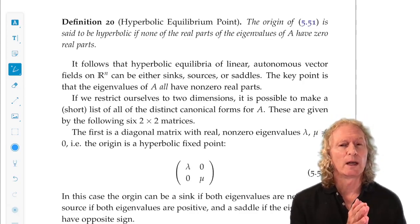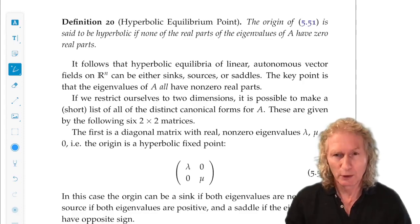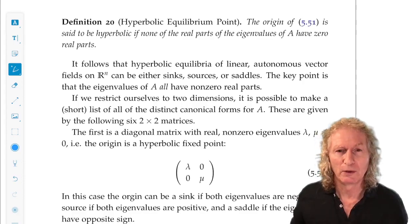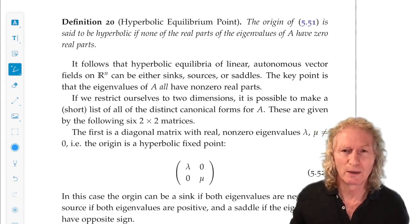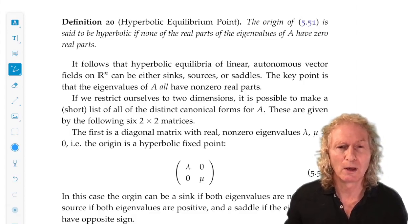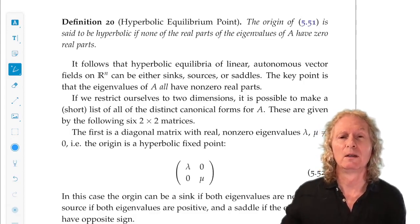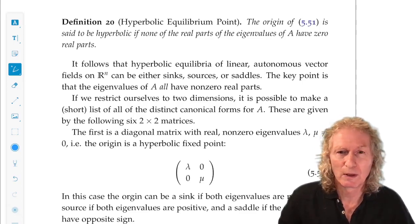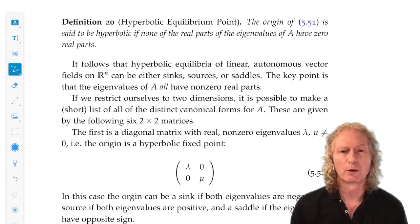Unstable subspace would correspond to the span of generalized eigenvectors corresponding to eigenvalues with positive real part. And then we have something we didn't see in the examples, we have the center subspace, the span of the generalized eigenvectors corresponding to eigenvalues having zero real part. Now we're going to see concrete examples of all of these throughout the rest of the course.